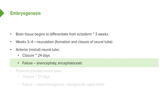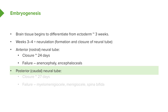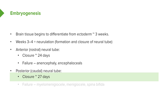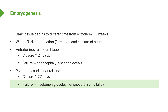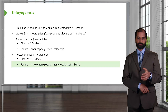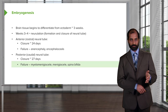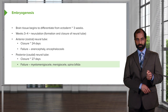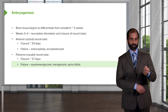This applies to the rostral portion of the neural tube. The posterior portion is called the caudal portion, and it requires approximately 27 days to close — a little longer than the anterior. Failure of closure here puts you into the category of spina bifidas: either the occulta, the meningocele, or the myelomeningocele, which involves both the spinal cord and the meninges protruding out.